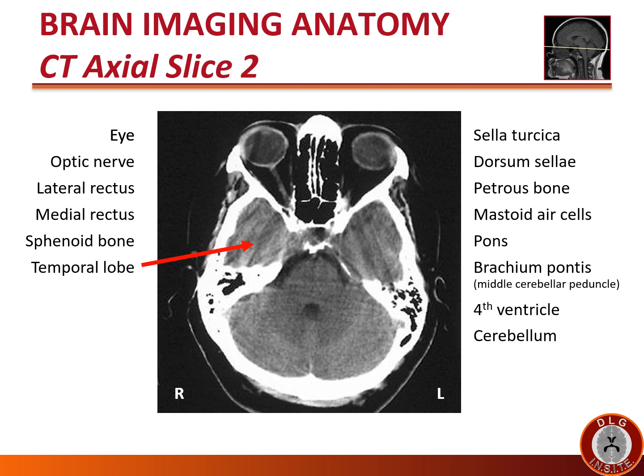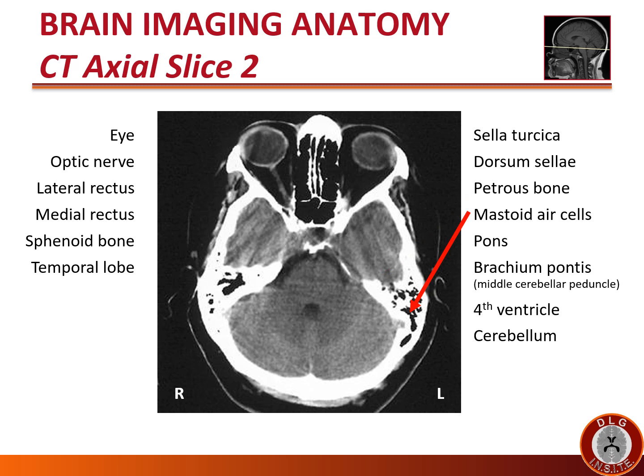The sella turcica, which literally means 'the Turkish chair,' houses the pituitary gland. Dorsum sellae literally means 'back of the chair.' This is the bony extension of the clivus that serves as the back of the sella turcica. Once again we see the petrous bone forming the posterior aspect of the middle cranial fossa, and the mastoid air cells.